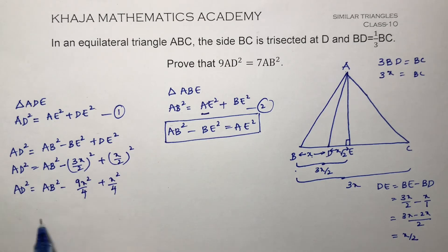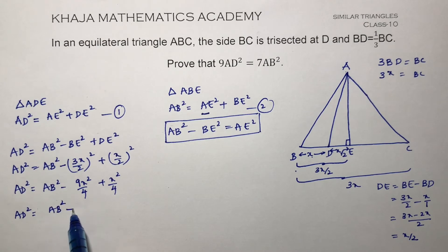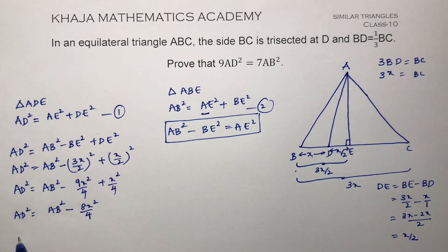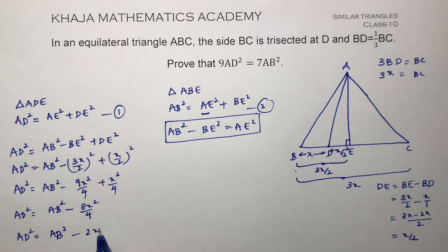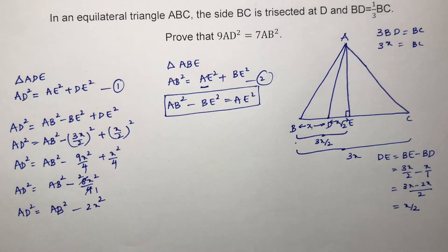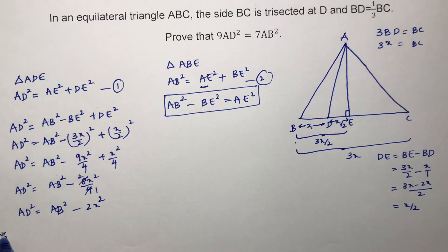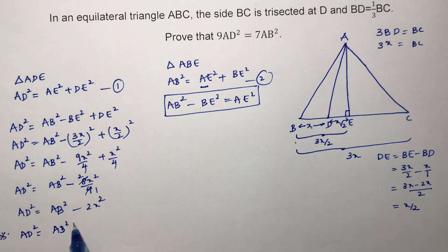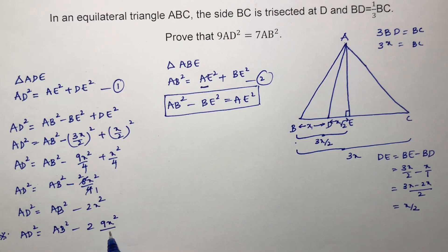So AD² equals AB² minus (9X² minus X²)/4, which is AB² minus 8X²/4, giving AD² equals AB² minus 2X². Now comes the most important step: I'll write X² as 9X²/9.